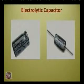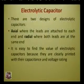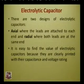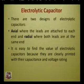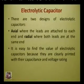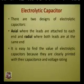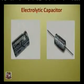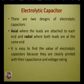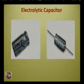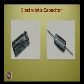Electrolytic capacitors come in two designs: axial, where the leads are attached to each end, and radial, where both leads are at the same end. It is easy to find the value of electrolytic capacitors because they are clearly printed with their capacitance and voltage rating — for example, 20 microfarad with a voltage rating of up to 25 volts.